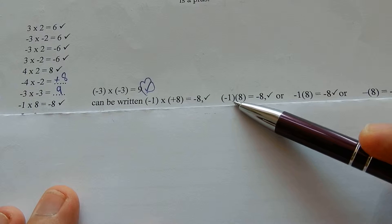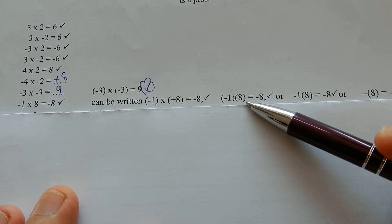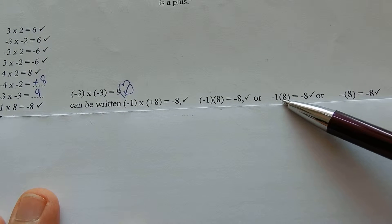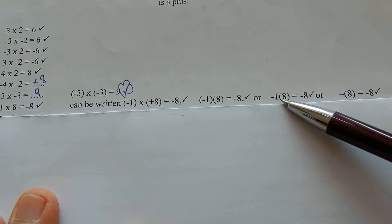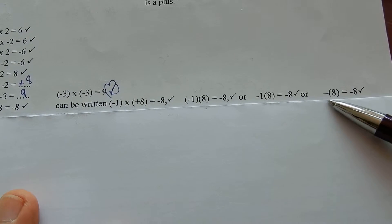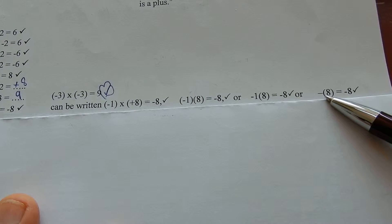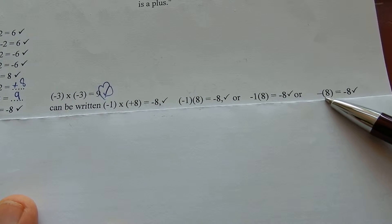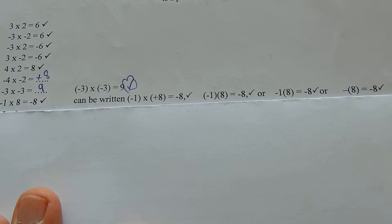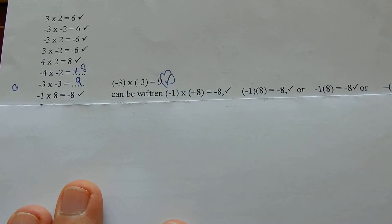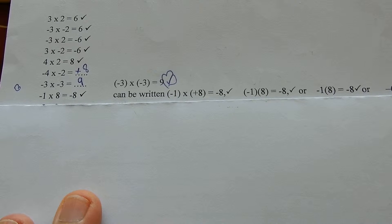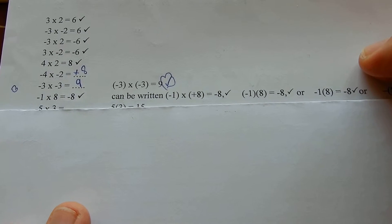Or: brackets, minus 1, brackets, times brackets, equals minus 8. Or: minus 1, open brackets, times, minus 1, open bracket, minus 1, times, open brackets, 8, close brackets, equals minus 8. They are all ways of getting minus 8 — all different ways of saying minus 1 times 8 equals minus 8. Yay!